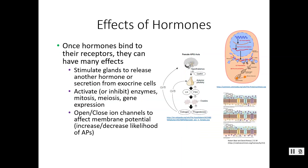The effects of hormones are varied. We could stimulate other glands to release hormones or stimulate exocrine cells to secrete substances. We could activate or inhibit enzymes, mitosis and meiosis, or even gene expression — also known as protein synthesis. Hormones can also affect ion channels; opening or closing them affects membrane potential and could increase or decrease the likelihood of action potentials.